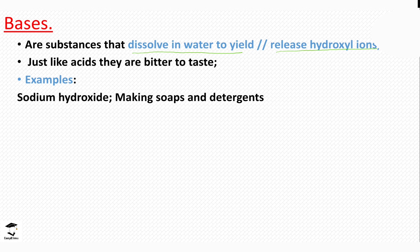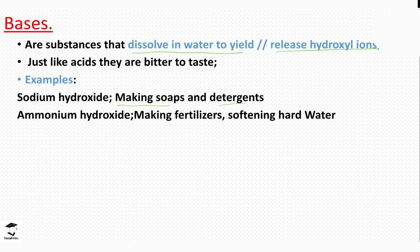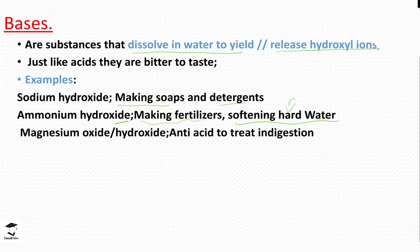Some examples of bases: we have sodium hydroxide, which is majorly used for making soaps and detergents. We have ammonia hydroxide, used for making fertilizers and softening hard water. We also have magnesium hydroxide, which is a very common antacid — it is used to treat indigestion, especially when people have heartburn caused by hydrochloric acid in the stomach.